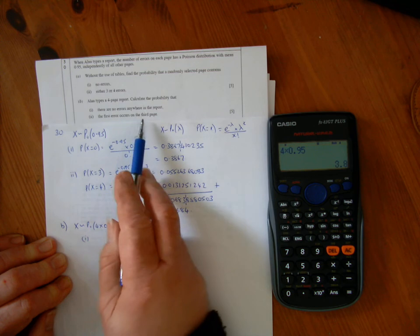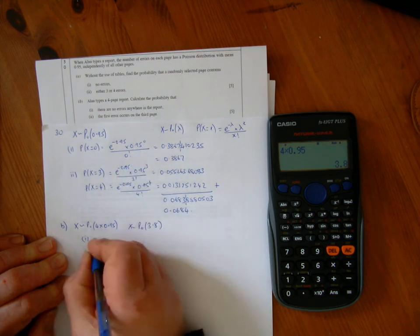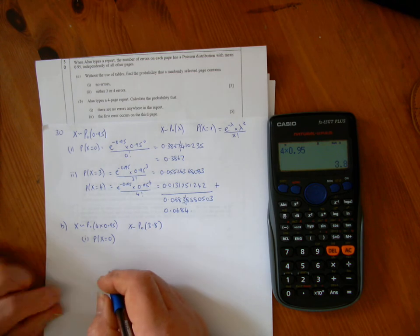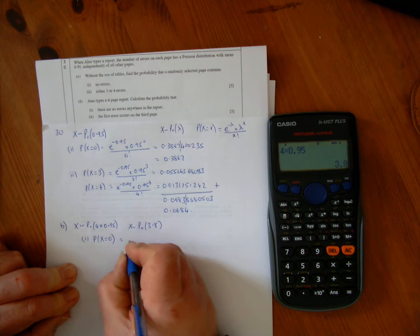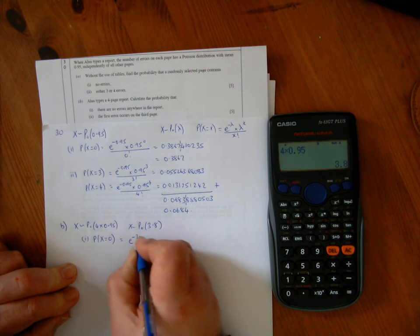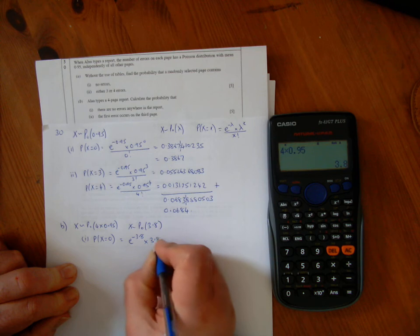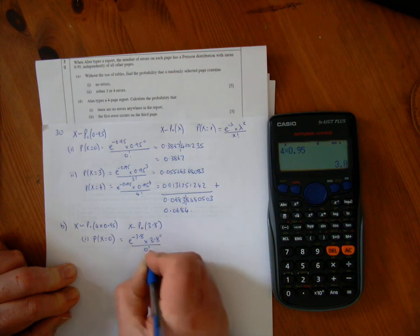In part 1, there are no errors anywhere in the report, so that's the probability that X equals 0. From the formula, that would be e to the minus 3.8 times 3.8 to the power of 0 divided by 0 factorial.